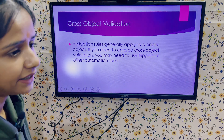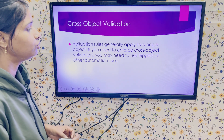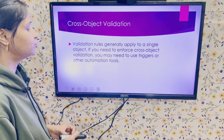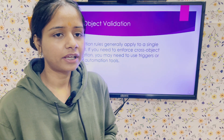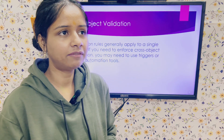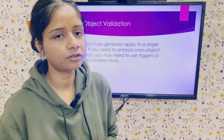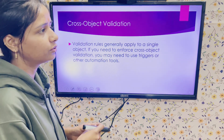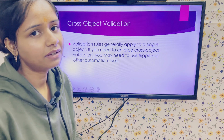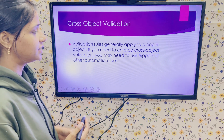Next is cross-object validation. Validation rules generally apply to a single object. If you need to enforce cross-object validation, you may need to use triggers or other automation tools. For example, if I write a validation rule on the Account object, it will only show errors on Account — it cannot show errors on the Contact object based on changes to Account. In such cases we require triggers and flows.